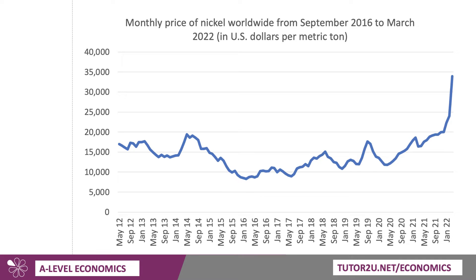A good example of price volatility is the price of nickel. In March 2022 there was a huge surge — the price of a metric ton of nickel reached something like $34,000 US dollars, compared to December 2016 when the price was below $10,000. So there's been huge volatility in the world price of nickel — an upward trend over the last few years but with lots of fluctuations. Prices rose because of disruptions to supply chains and a general global scarcity of raw materials and metals as the world economy recovered from the pandemic. Nickel is a good example of derived demand — it's crucial for industries such as the production of stainless steel, and as construction picked up again, so too did demand for nickel.